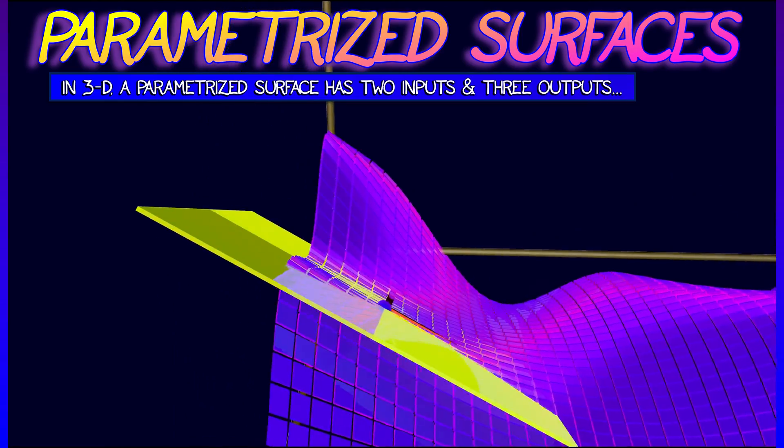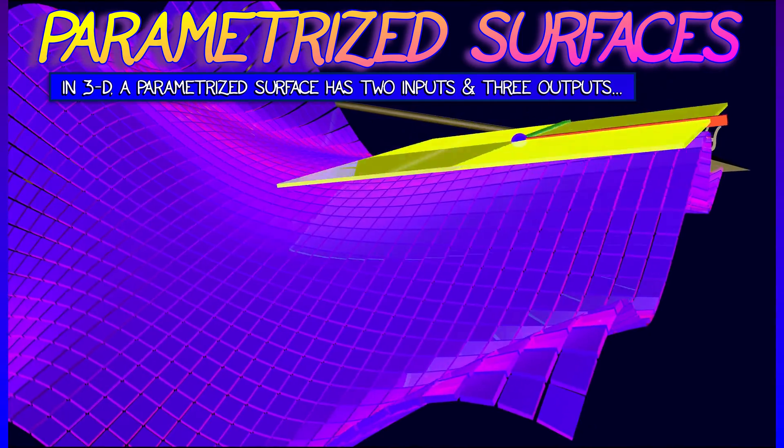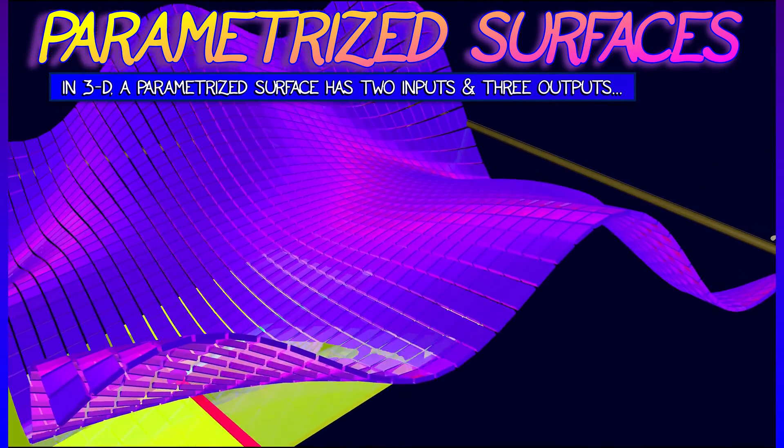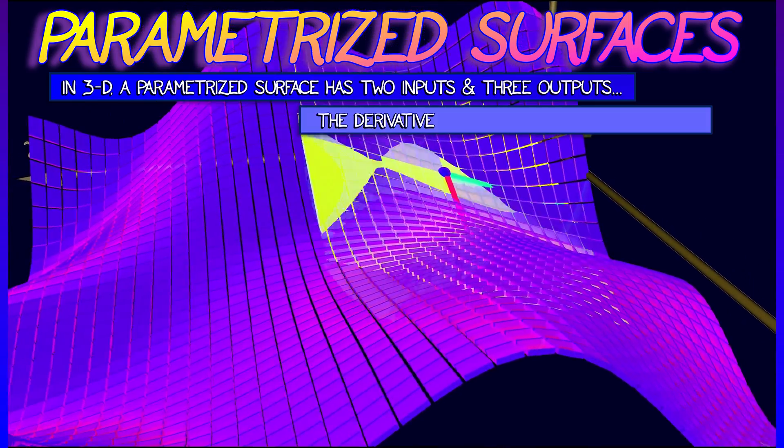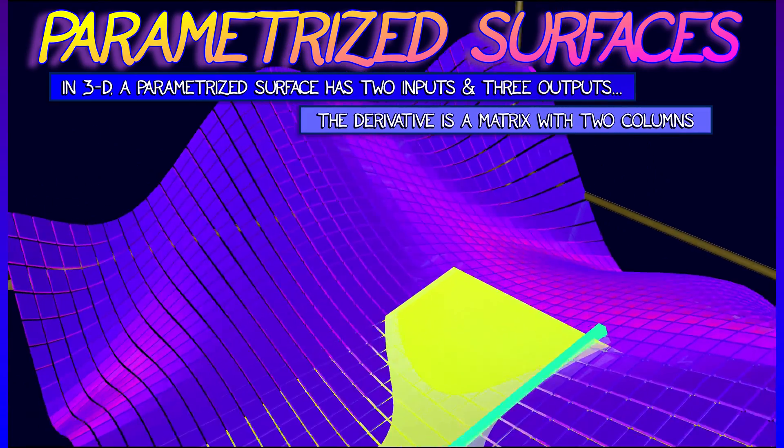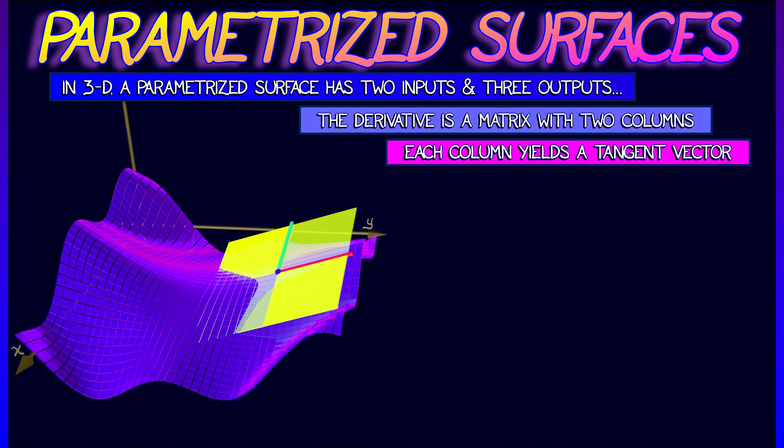Now, how do we get a tangent plane in this case? Well, here, the derivative is going to help us, because the derivative is going to have two column vectors, not one, corresponding to the two inputs. Those two column vectors, those vectors are tangent to the surface, and they're going to be a basis for a tangent plane.